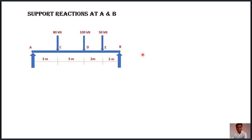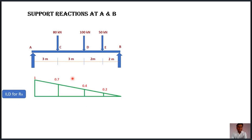By a regular method, taking moment about point A and applying ΣFy = 0, you can easily find reaction at A and reaction at B. But in this example we have to study how to find Ra and Rb using influence line diagram. For that, we need the influence line diagram for support reaction at A and support reaction at B. When the unit load moves from A to B over the simply supported beam, reaction at A varies from one to zero.